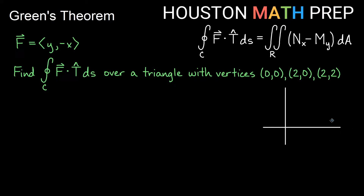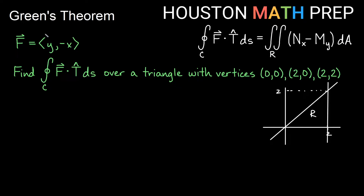These vertices are in the first quadrant: (0, 0), (2, 0) out at 2, and (2, 2) up at 2 units above that. So the triangle looks like that — this is our region. We'll set up our double integral using this region and integrate N_x minus M_y. M is y and N is −x. So partial M_y — the partial derivative of y with respect to y — is 1. And partial N_x — the partial derivative of −x with respect to x — is −1.